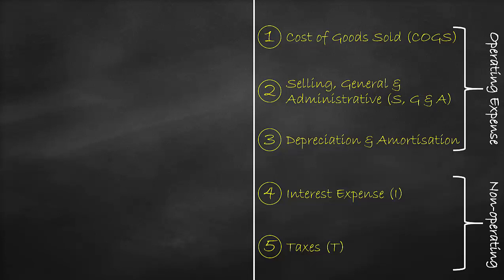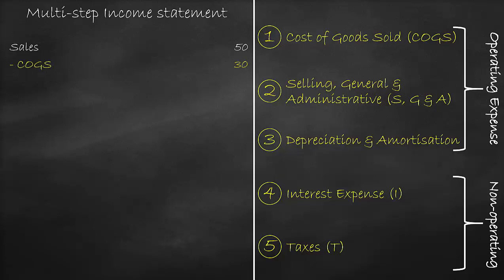In order to prepare the multi-step income statement, we need to deduct each expense from the company's sales or revenue. Our top line, or sales, is going to be $50 million. Then, we deduct the first level of expense, which is the cost of goods sold, of $30 million. This will give us the first level of profit, which is called gross profit, of $20 million — calculated as $50 million minus $30 million.